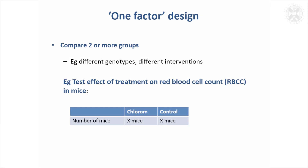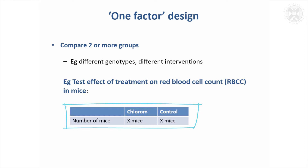I'll now run through briefly thinking about setting up different types of design. A very simple design might be described as a one-factor design, where you've got different groups that you want to compare statistically. Here we've just got two different groups of mice and we want to see what the effect of a chloram treatment compared to controls is on red blood cell count. We want to allocate some mice to the treatment and some mice to be controls.